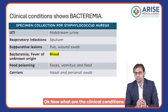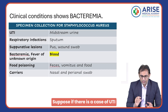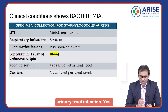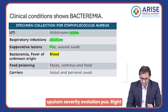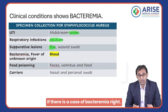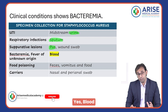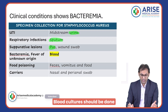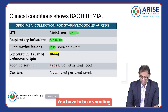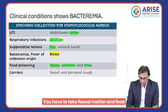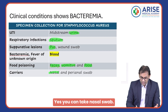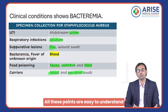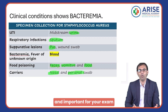Clinical conditions and specimen sources: UTI → urine; respiratory infections → sputum; suppurative lesion → pus; bacteremia or fever of unknown origin → blood culture; food poisoning → vomit, fecal matter, and food samples; carrier state → nasal swab or perianal swab. All these points are important for your exam.